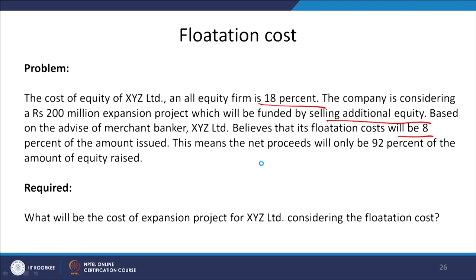In that process the project cost became 217.39 million, and 17.39 million was the flotation cost. That seems to be a better analogy because being a one-time cost you add it into the project cost. When we recover the total project cost through the project cash inflows, we have to recover not only 200 million in present value terms but 217.39 million. Being a one-time cost it should be adjusted in the project cost, not in the weighted average cost of capital.